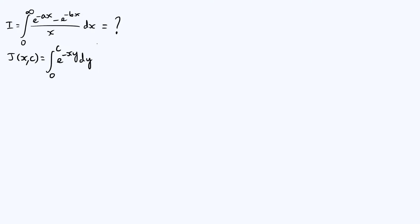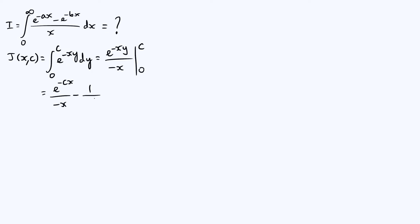Let's evaluate that and see how it's related to I. Integrating with respect to y, you get back your exponential e^{-xy} divided by -x, because that was the coefficient of y in the exponent. Evaluating at 0 and c: substituting c gives e^{-cx} / (-x), and subtracting the value at y=0 gives -1/(-x), since e^0 = 1. Tidying that up, you get -e^{-cx}/x + 1/x, and this equals J(x, c).